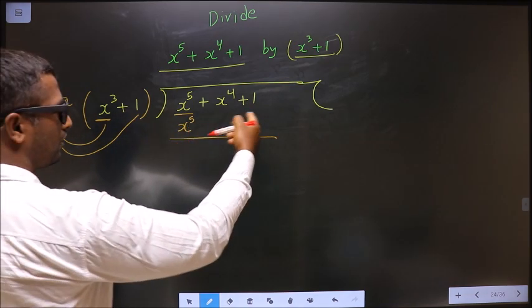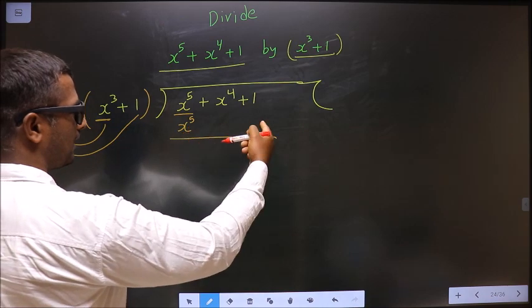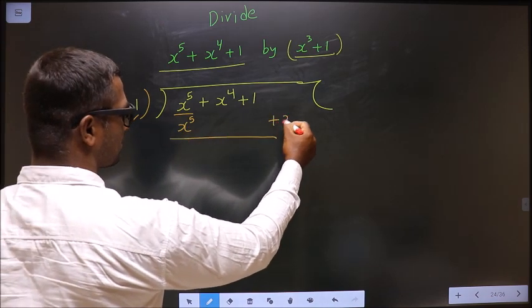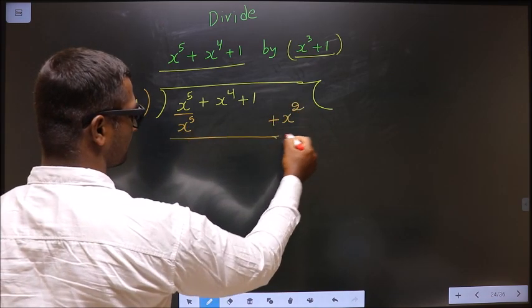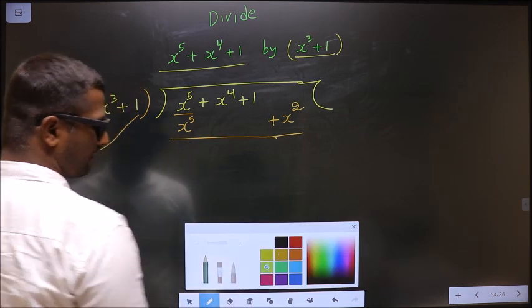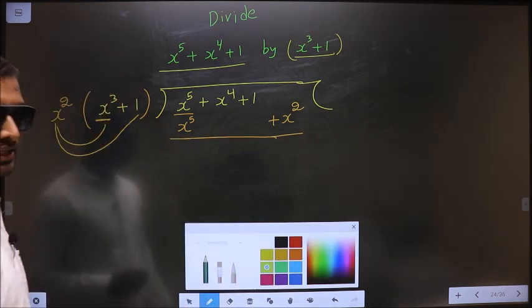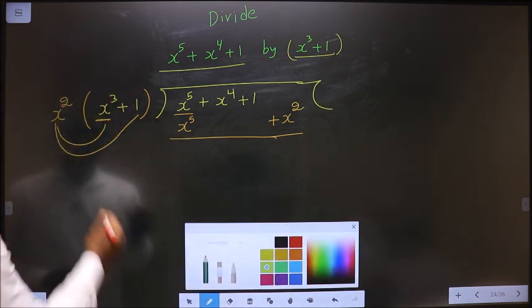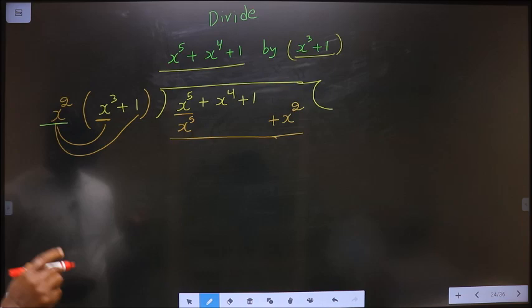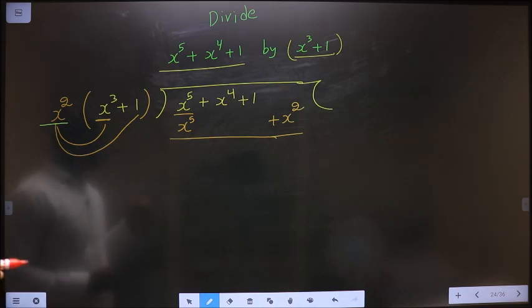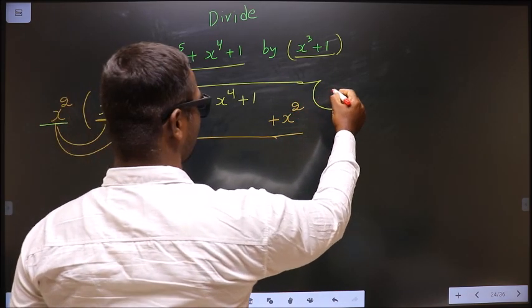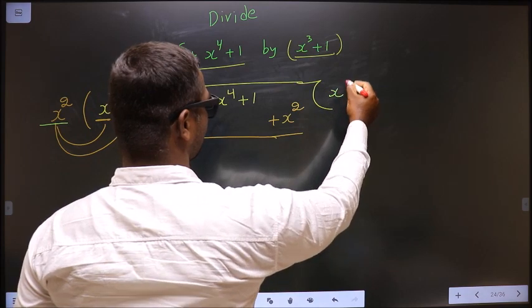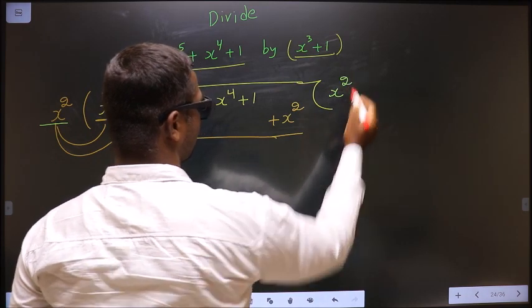Here you do not have x square term, so I write it at last. This becomes your first term of the quotient. So write in the quotient that is here: x square.